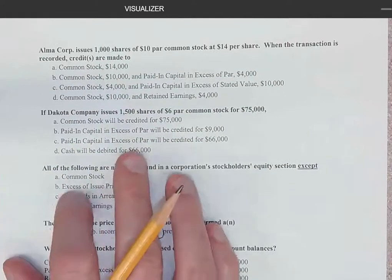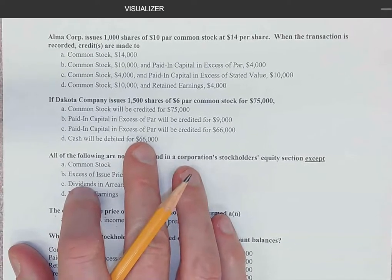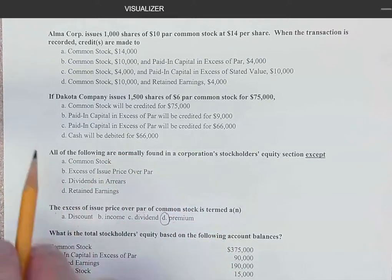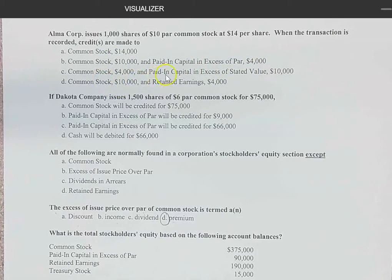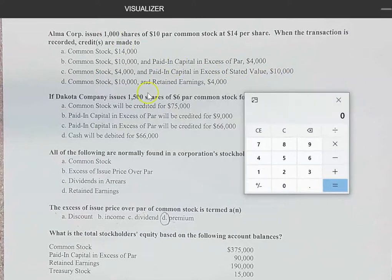Let's look at a question: Alamo Corporation issues 1,000 shares of $10 par common stock at $14 per share. When the transaction is recorded, credits are made to which accounts? The choices include: $14,000 to common stock; common stock $10,000 and paid-in capital in excess of par $4,000; or common stock $4,000 and paid-in capital in excess of par $10,000. We've got 1,000 shares sold at $14, giving us $14,000 total.